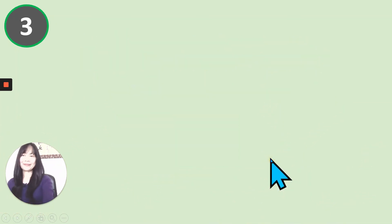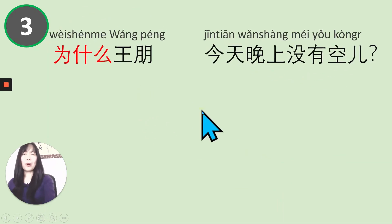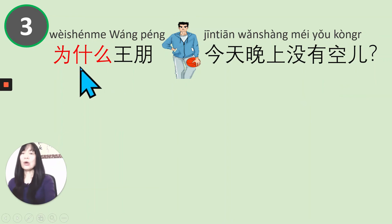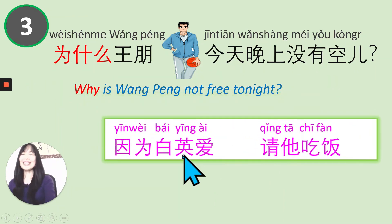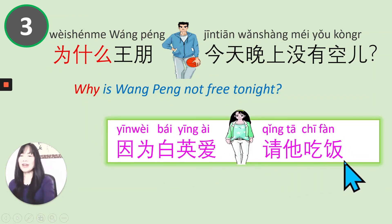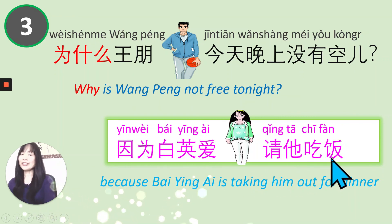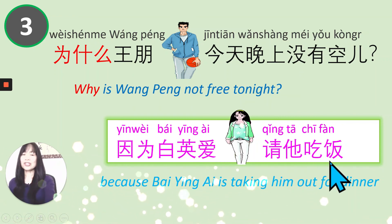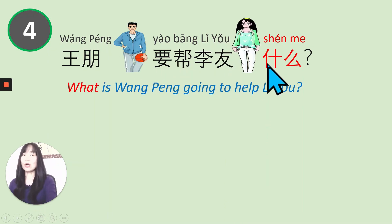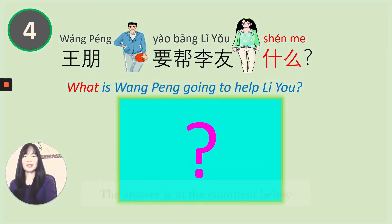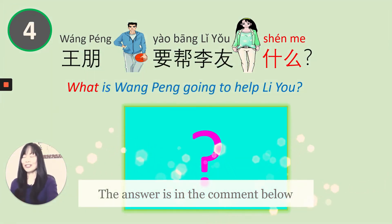Number three: 为什么王鹏今天晚上没有空? Why is Wang Peng not free tonight? 因为白银爱请他吃饭 — because Bai Ying'ai is inviting Wang Peng for dinner. 因为白银爱请他吃饭. Last question number four: 王鹏要帮李友什么? What is Wang Peng going to help Li You with? You do know the answer — the answer is in the comment below.